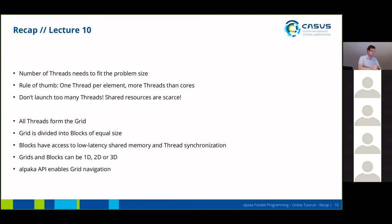The number of threads needs to fit the problem size. As a good rule of thumb to start programming, you should spawn one thread per element and have more threads than you have cores. But don't launch too many threads — what 'too many' means depends on your hardware. Shared resources are scarce, and the more threads you spawn, the more bottlenecks you create when accessing shared resources. In our example we have the IO buffer, where multiple threads have to be serialized so that they don't produce gibberish on the output buffer.